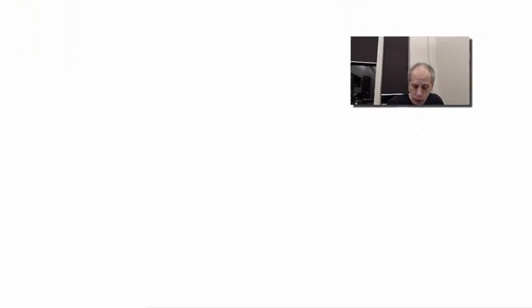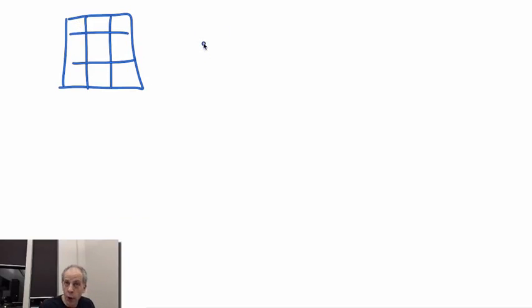So what's the median filter? Very simple. What we do is we actually take, let's say if we are working on a 3 by 3 neighborhood, we basically order the pixels. So we basically order them from the smallest to the largest, and we pick the one in the middle.